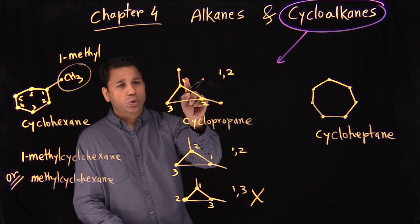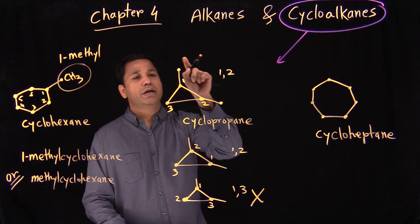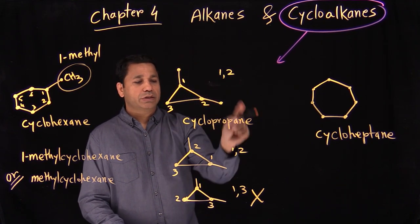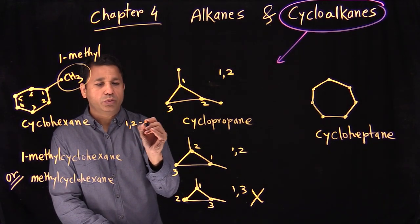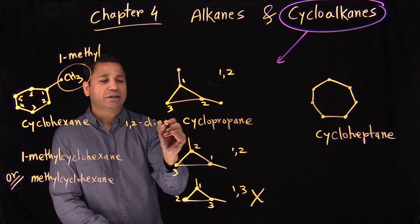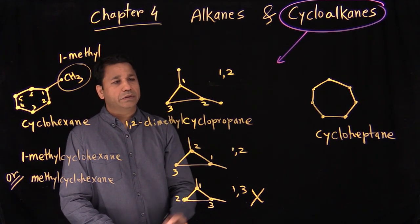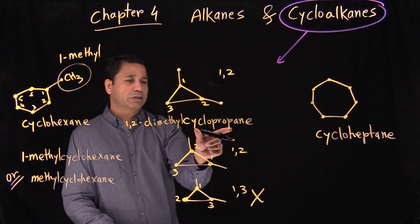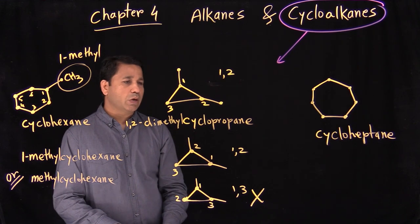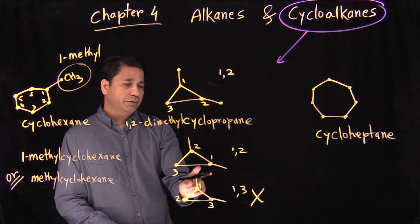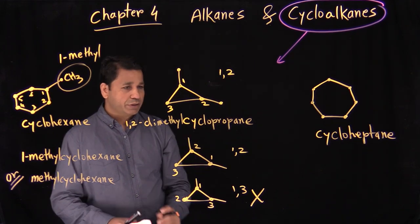You can try all possible directions and see which gives the lowest numbers for the branches. Here we have two methyl groups, so the name is 1,2-dimethylcyclopropane — branches and parent put together.